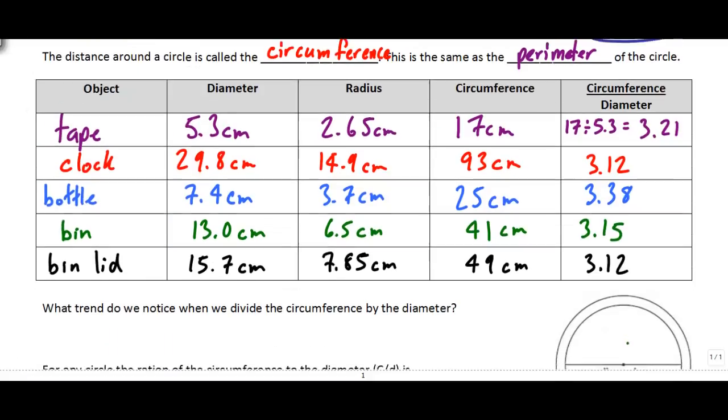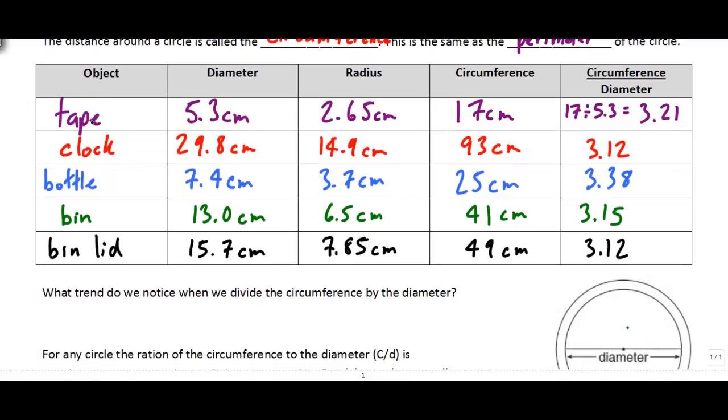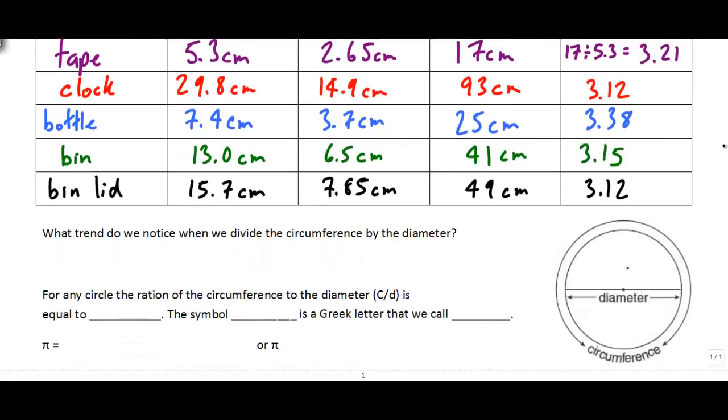So what I want you to notice is that these things are all quite different sizes. The tape, the clock, the bottle, the garbage bin, they're all very different sizes. And yet when we divide their circumference by their diameter, we're getting kind of close to the same number. So what you should notice is when we divide the circumference by the diameter for any circle, no matter what the size is, the answer is roughly 3.